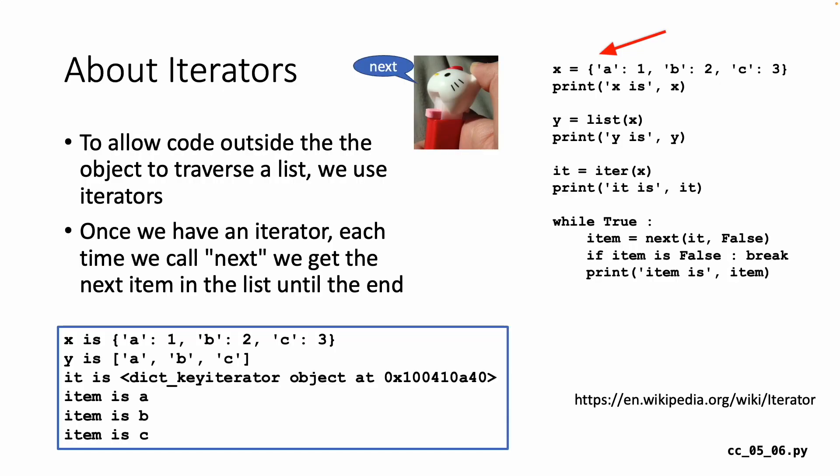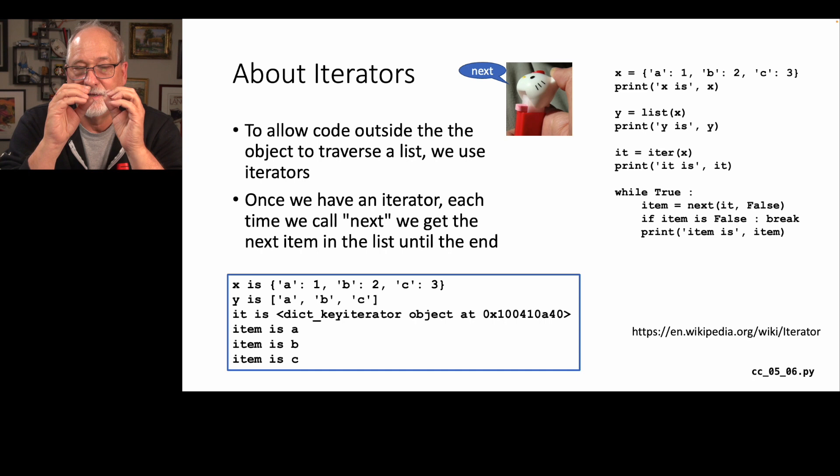So if we look at this Python code, well, we start with a dictionary. A maps to one, B to two, C to three. And we print it and there's the dictionary and we say, oh, let's convert that to a list. And that list is the keys, which is A, B, C. And then say, give me an iterator from that dictionary. We print that out and we print the type of it. It is of type dict underscore key iterator object. And so the iterator itself is not the entire dictionary. It is not a list of all the keys. It is an internal structure that Python is going to maintain.